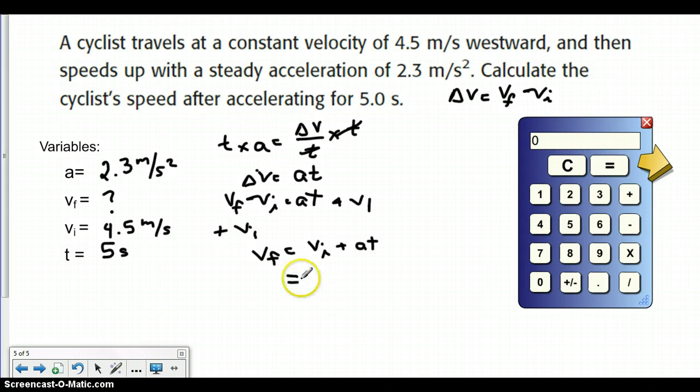And then we're just going to plug in all of our different variables, all of our numbers. So we get 4.5 meters per second plus 2.3 meters per second squared times 5 seconds. We'll do it in the correct order, right? We always do our multiplication before our addition. 2.3 times 5 equals 11.5. And then we're going to add to that our 4.5, which gives us a total of 16.